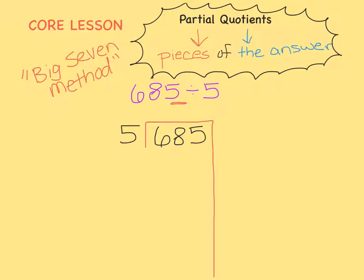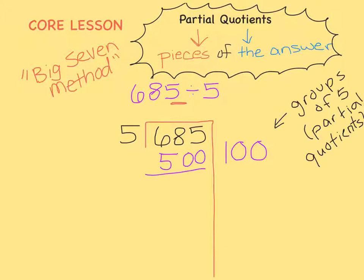Let's start finding our Partial Quotients. What's something easy we can multiply 5 by that's less than 685? I know 5 times 100 equals 500, so let's take 100 groups of 5 out of 685. I wrote the number of groups I'm taking out on the side — these are our Partial Quotients, pieces of our answer. 100 groups of 5 is 500, so we subtract. When I take 100 groups of 5 out of 685, I'm left with 185.